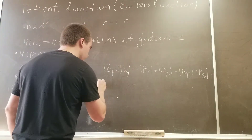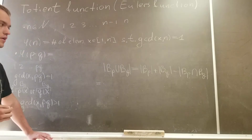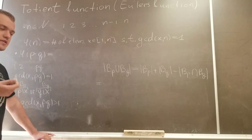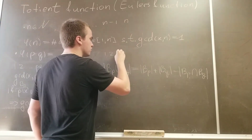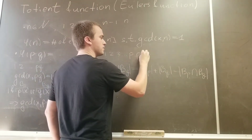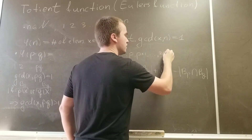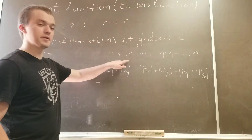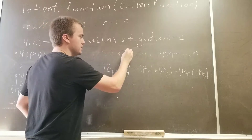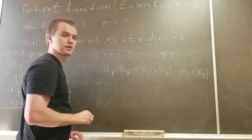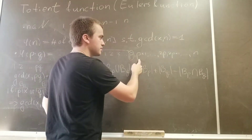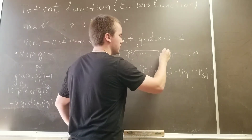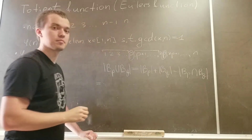So we need to find what B(p) is — how many elements in this interval are divisible by p. Let's visualize this. Take elements 1, 2, 3, up to p, then p+1 up to 2p, then 2p+1, etc. Since p is prime, elements 1 through p-1 are not divisible by p, but p is divisible by p — we get one element. Similarly, elements p+1 through 2p-1 are not divisible by p, but 2p is, and so on.